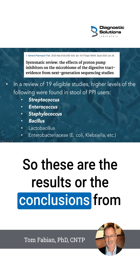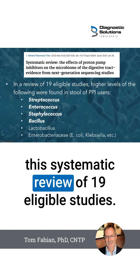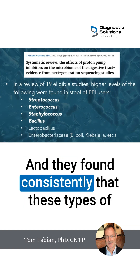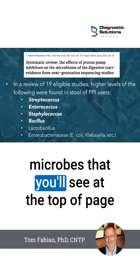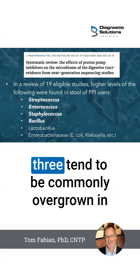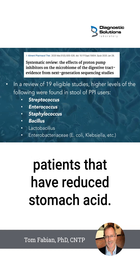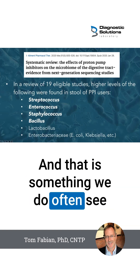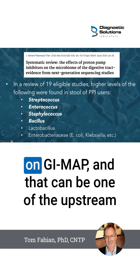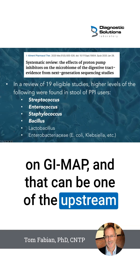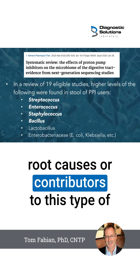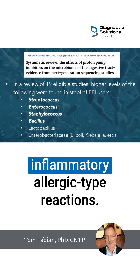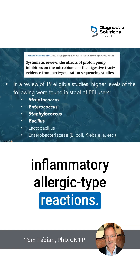These are the conclusions from a systematic review of 19 eligible studies. They found consistently that these types of microbes — seen at the top of page 3 — tend to be commonly overgrown in patients that have reduced stomach acid. That is something we do often see on GI Map, and it can be one of the upstream root causes or contributors to this type of dysbiosis that may then go on to promote these inflammatory, allergic-type reactions.